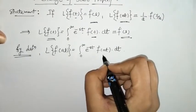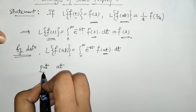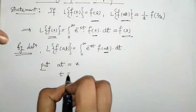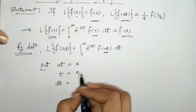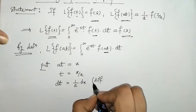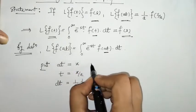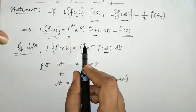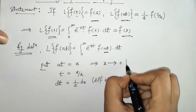Now we apply a substitution: put at = x, so t = x/a and dt = (1/a) dx. For the limits, when t = 0, x = 0, and when t = infinity, x = infinity. So x changes from 0 to infinity.